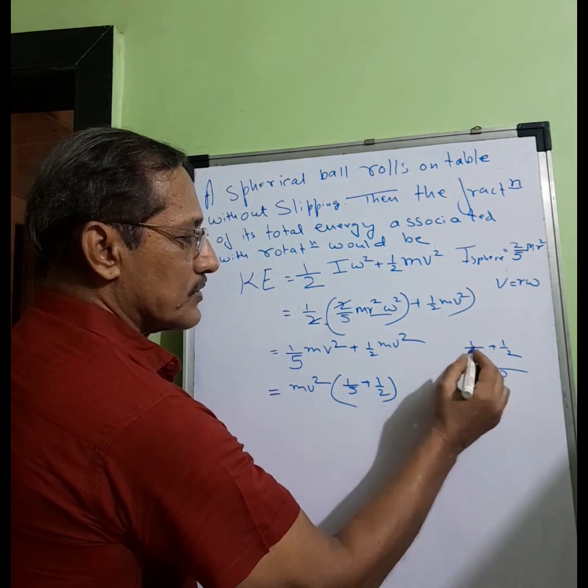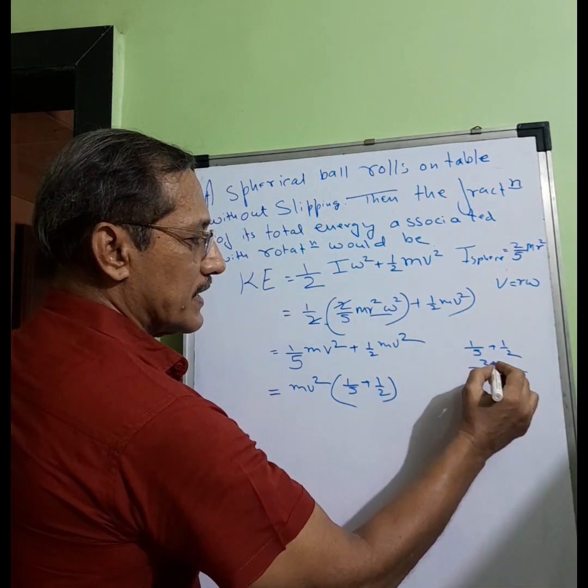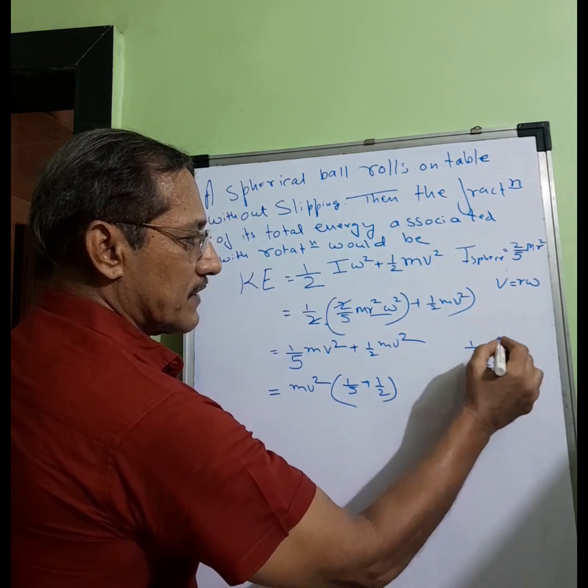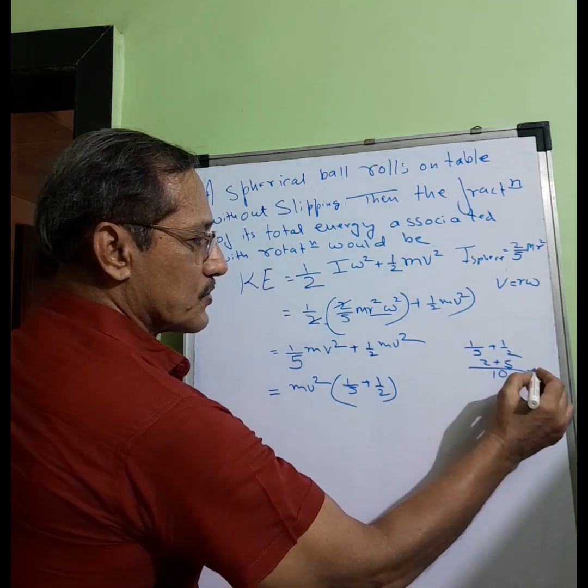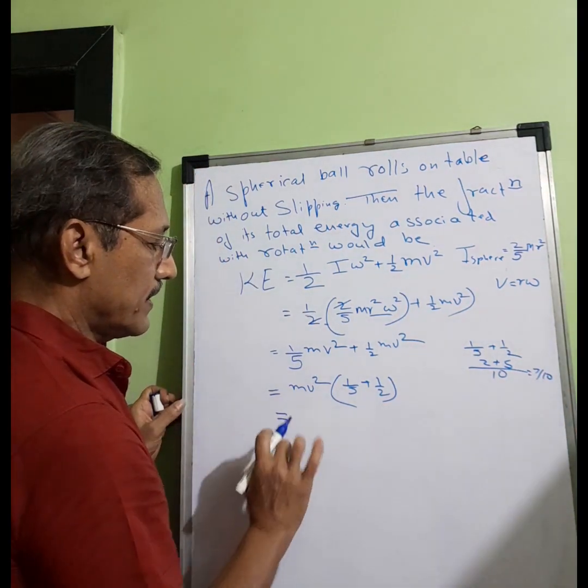So 10 is the LCM. 2 2s are 10, 2 5s are 10. So it comes to 2 into 1 is 2, 5 into 1 is 5, so it comes to 7/10. We can write it here as 7/10 mv².